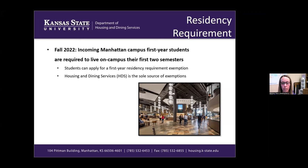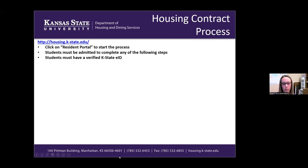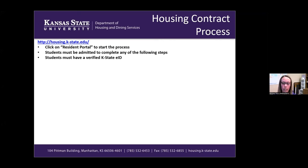If you have not yet done your housing contract or submitted an exemption for the residency requirement, you'll want to do that before you submit your housing contract. Anything related to housing and dining will be done through your Resident Portal, which you access by going to housing.k-state.edu — that link will be on every single slide. If you have not yet been admitted to the university you won't be able to access your Resident Portal; you must have a verified K-State EID with your username and password set up.